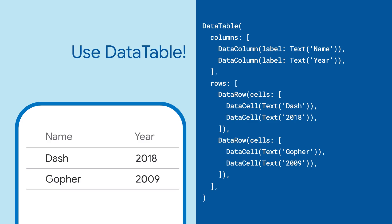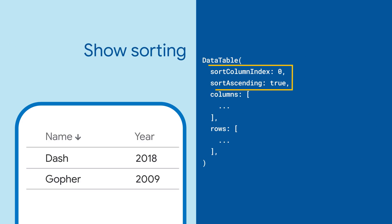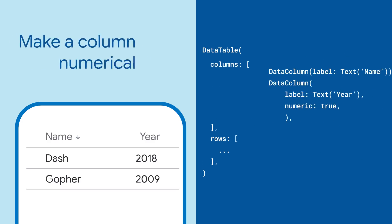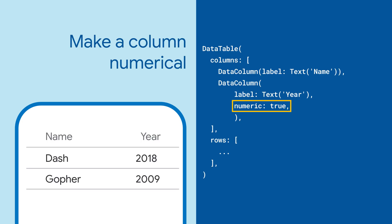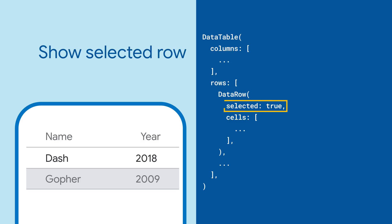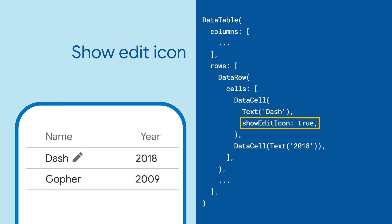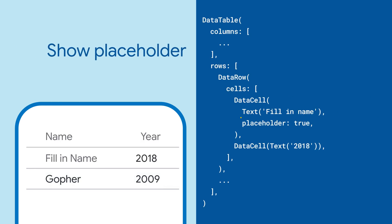But wait, there's more! You can show how the table is sorted. You can make a column numerical, forcing right alignment in left-to-right layouts. You can show that a row is selected. You can show that a cell is editable or not yet filled in.